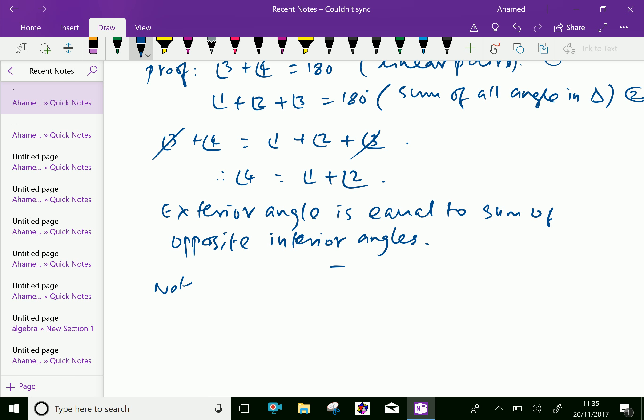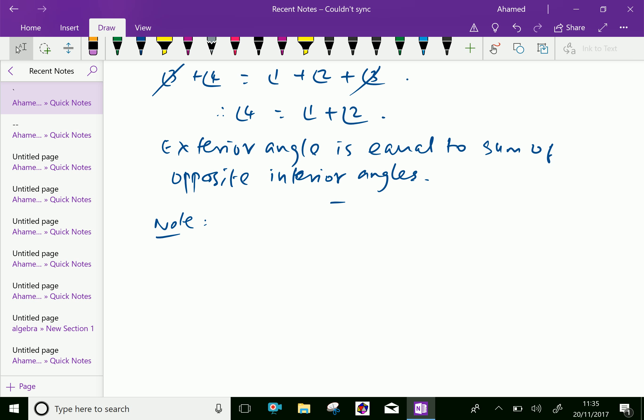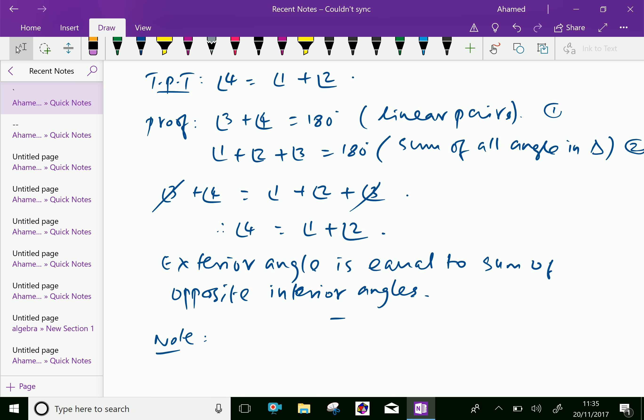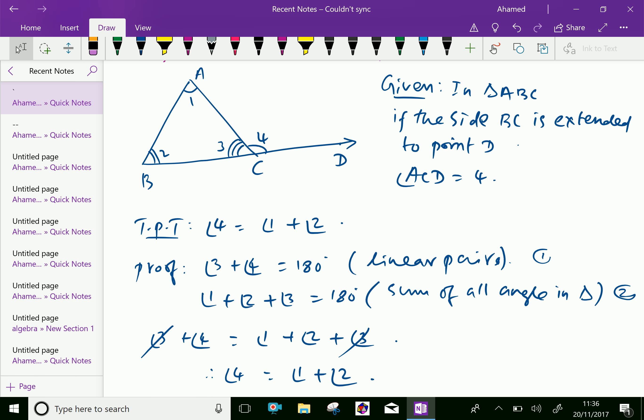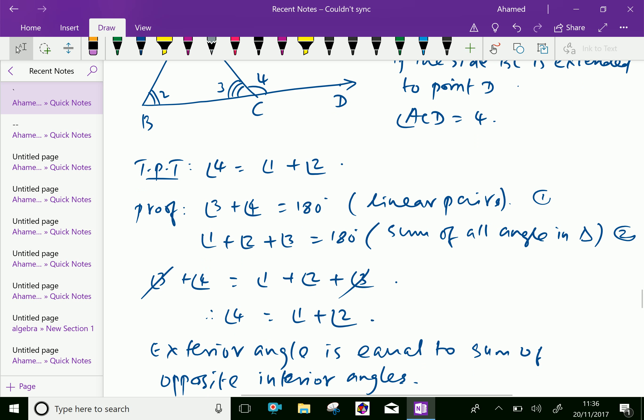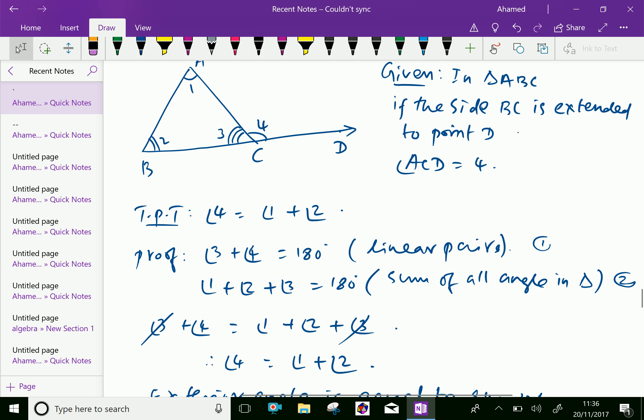Note this point: an exterior angle is greater than either of its interior opposite angles. The exterior angle 4 is greater than angle 1 or angle 2, because the sum of 1 plus 2 equals 4.